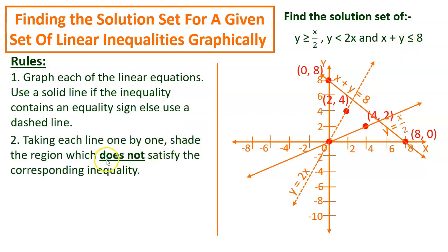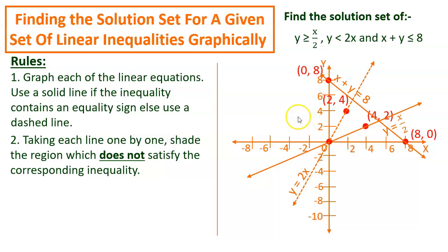Now, coming to the second rule: taking each line one by one, shade the region which does not satisfy the corresponding inequality. Each line divides the whole x-y plane into two parts. We take a point from either of the two parts and check whether that point satisfies the given inequality or not. If that point satisfies the inequality, then all points of that region will satisfy it. So we shade the opposite part which does not satisfy the corresponding inequality.